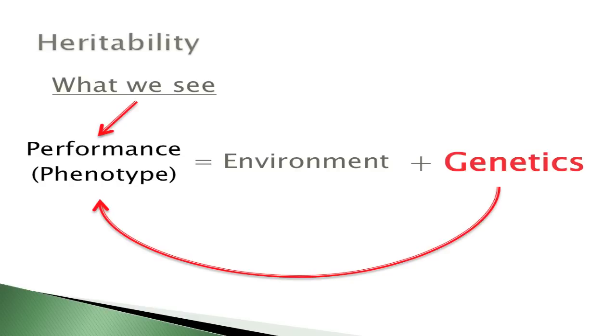Heritability is a ratio ranging from zero to one. If we go through the audience and take a height measurement on everybody, not everyone's the same — that's variability. When you walk through a barn and look at alpacas for fiber diameter, there are differences. Heritability tells us how much of that variability is due to genetics passed from parent to offspring. It ranges from zero to one and plays a key role in calculating EPDs.